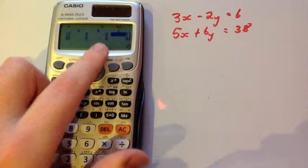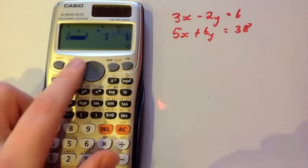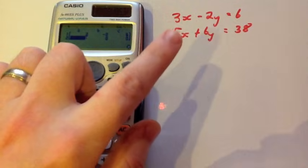That's equal to 6, so we'll just press 6 equals. You see you've got the 3, minus 2, and 6, and that's what we've got in the equation.